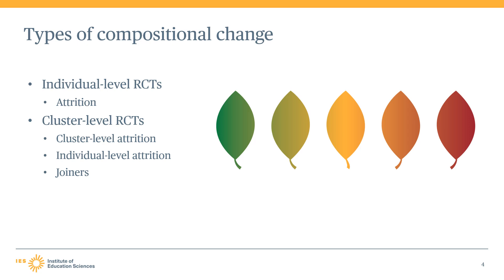In cluster-level RCTs, where clusters or groups of intact units are randomly assigned to conditions, the WWC considers three types of compositional change: cluster-level attrition, individual-level attrition, and joiners. We will provide greater detail on these types of compositional change in the remainder of this module.